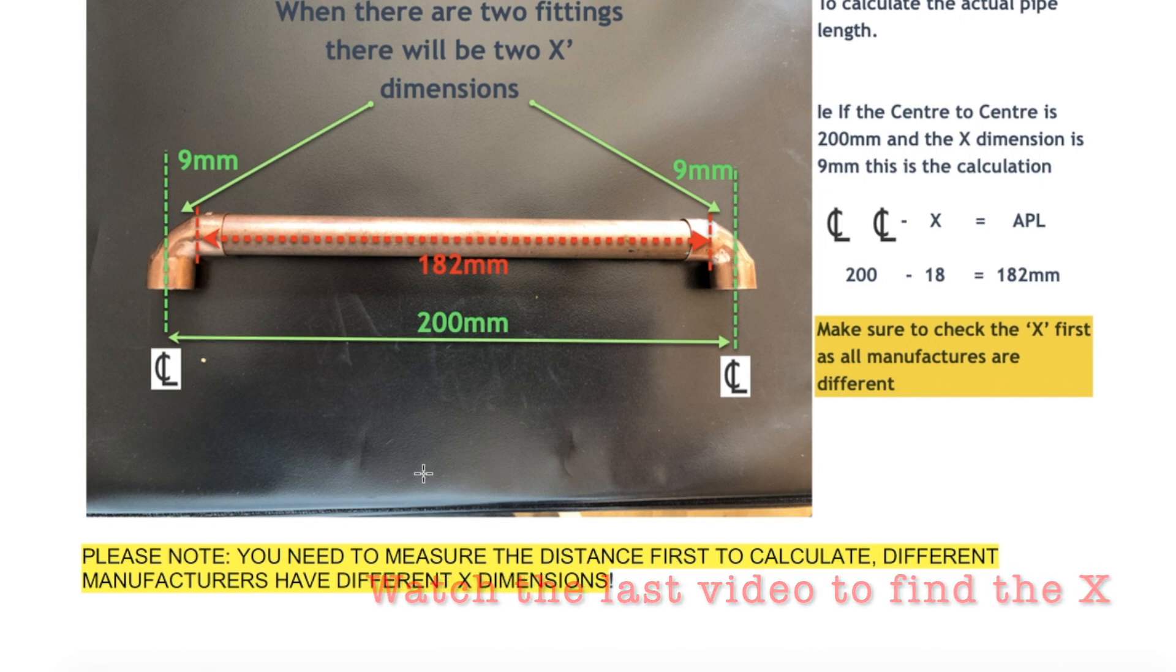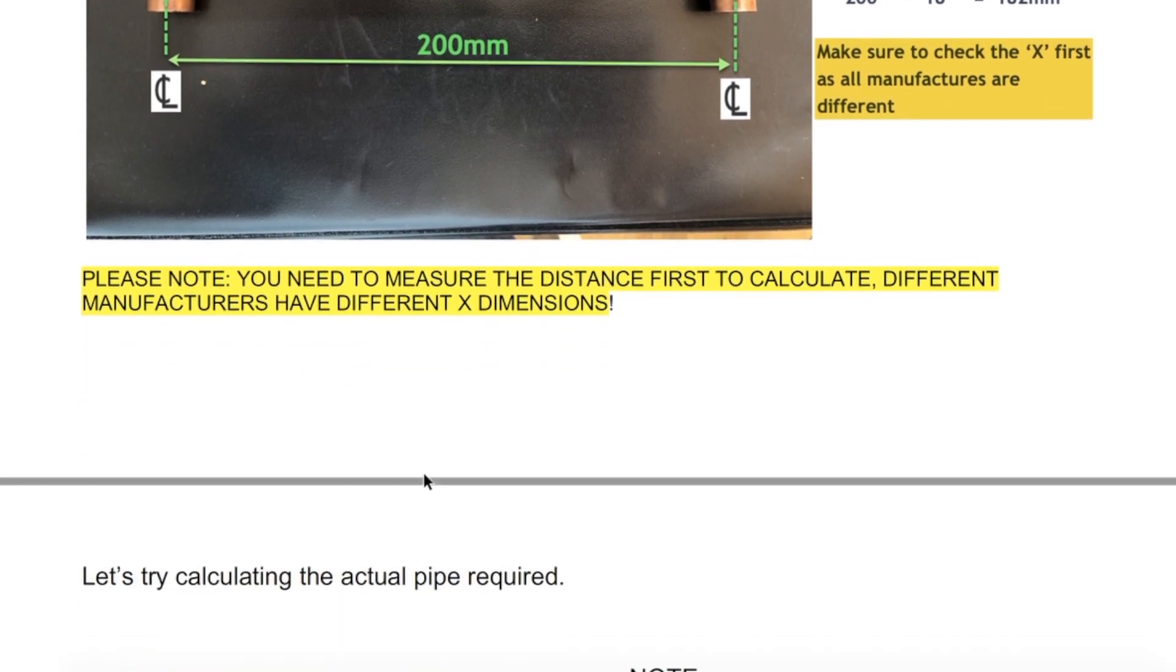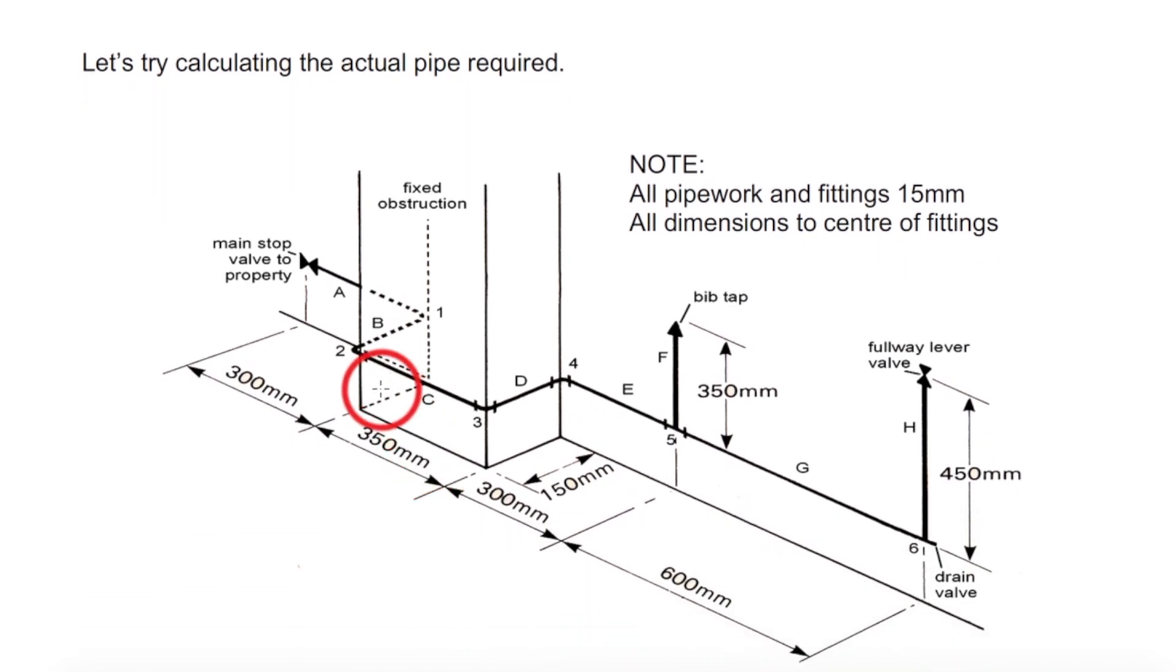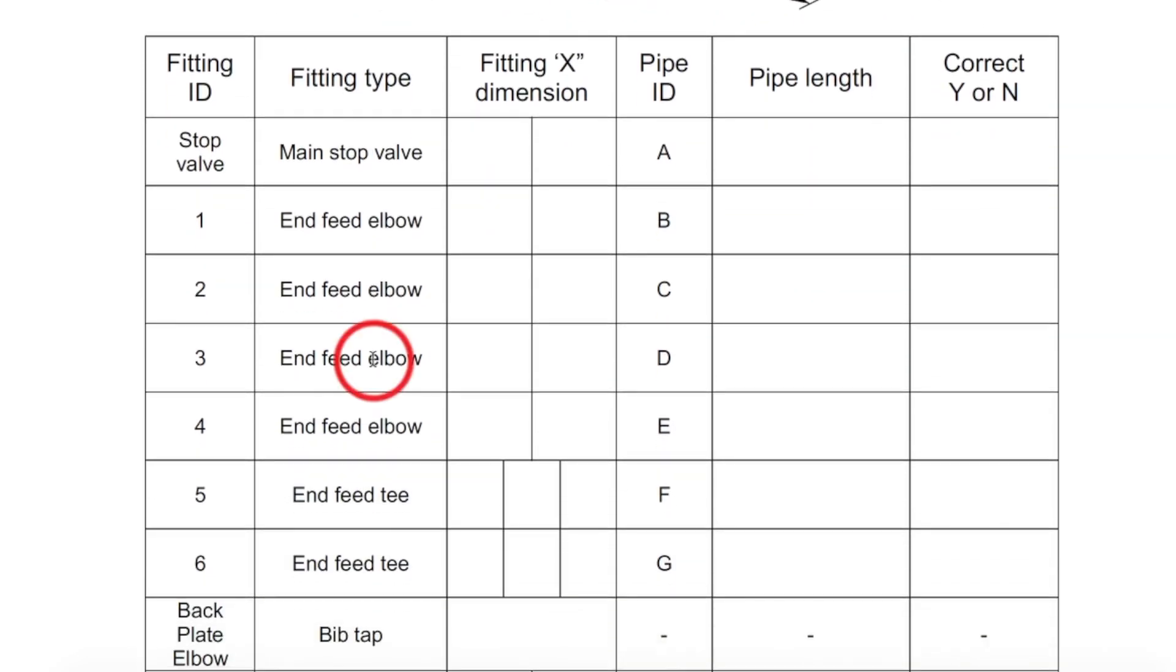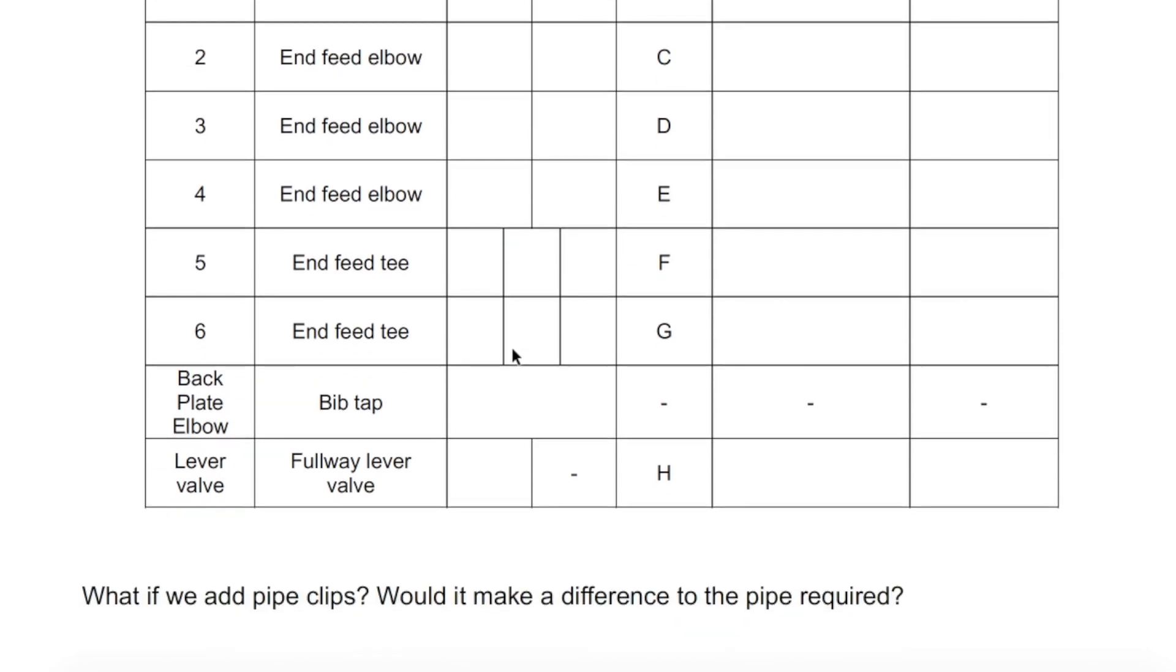This particular fitting I brought home today is actually 9mm. Watch my videos either before or after to show you how I've calculated that measurement. This will be printed off for you in class. I want you to complete this little table, telling me how much pipe we're going to require. Here's a stretchy question: what if we had pipe clips? Would it make a difference to the overall pipe required?